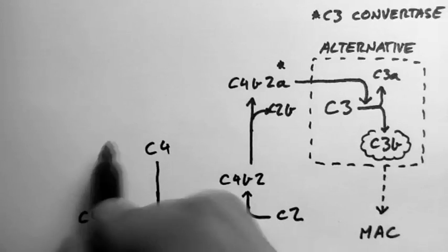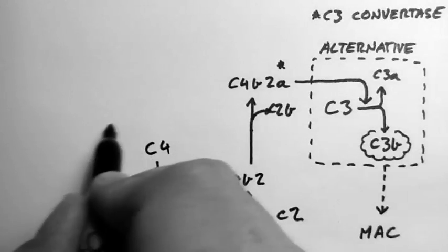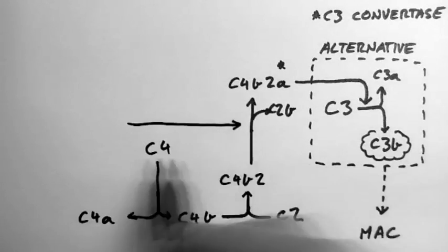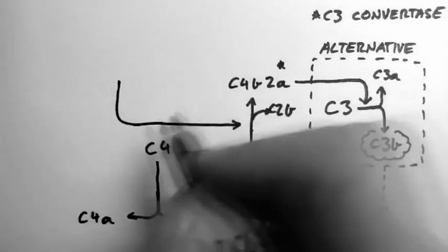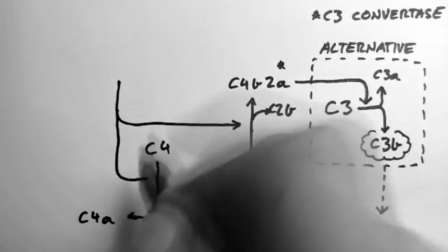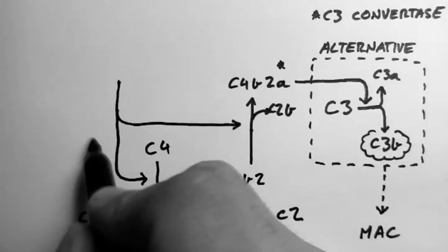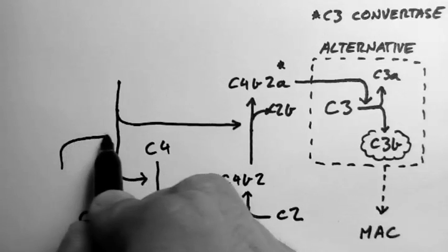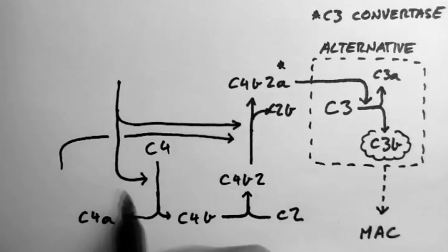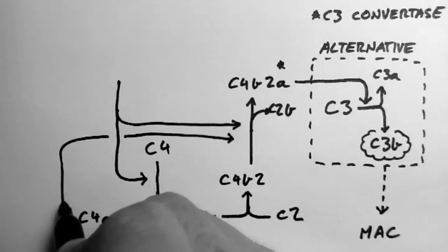So both the mannose binding lectin pathway and the classical pathway catalyze these two reactions here, which is the conversion of C4 and C2 into their components, and the conversion of C4b2 into C4b2a.